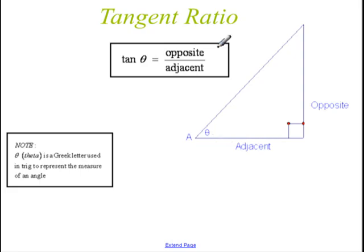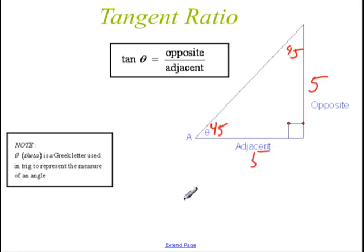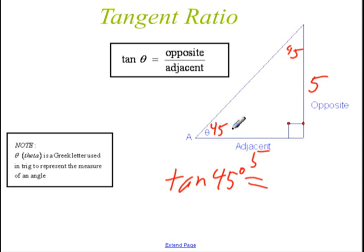The tangent is just the ratio of the opposite leg to the adjacent leg. For example, we've been studying 45-45-90 right triangles. If the two legs are both 5, I can write a trig equation: the tangent of 45 degrees is defined to be the ratio of the opposite leg — that's 5 — over the adjacent leg, which is also 5. So the tangent of 45 degrees equals 1, a nice friendly number.